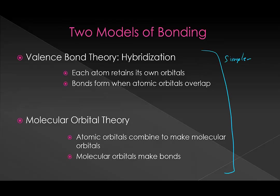Our first theory or model here is simpler. It's faster, but it's also less accurate. In a perfect world, we get to use MO theory, or even more complex ones, all the time. But valence bond theory works well enough that oftentimes we'll just want to use that since it's so much easier.